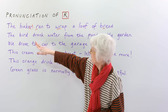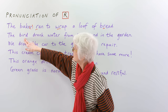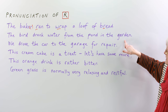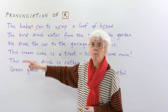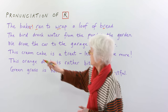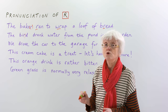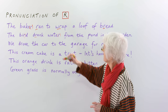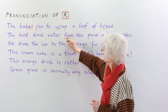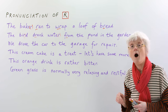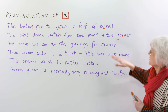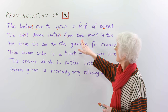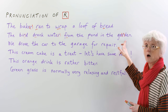Next sentence — try to say it before I do. The bird — ER sound, ERD — silent R there. Drank — that one is pronounced. Water — just a schwa sound, no R. From — that one's pronounced. The pond in the garden — not pronounced. So: the bird drank water from the pond in the garden.